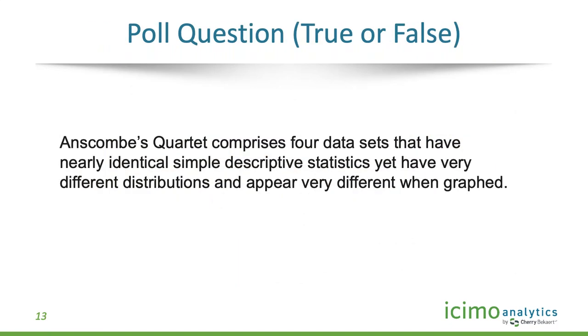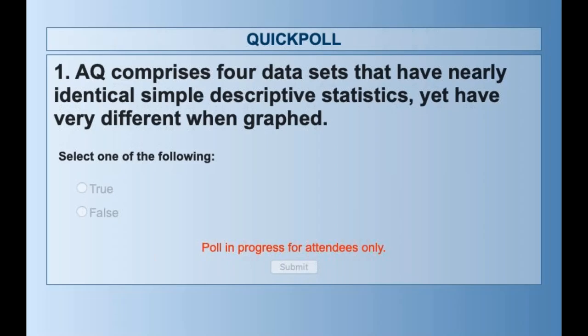The first poll question for CPE credit is true or false: Anscombe's Quartet comprises four data sets that have nearly identical statistics, yet are very different when graphed. Please answer the poll question to make sure you get credit.